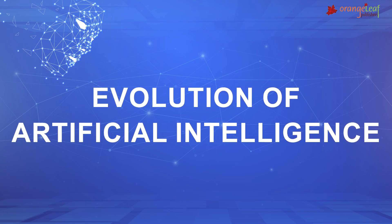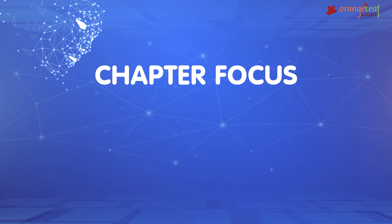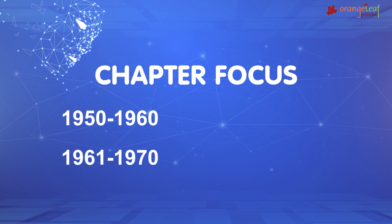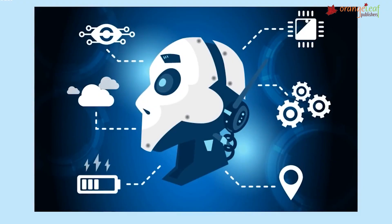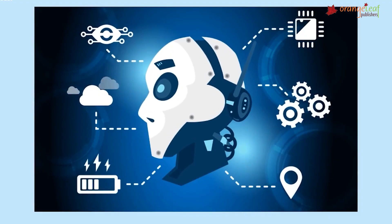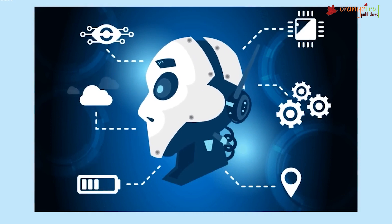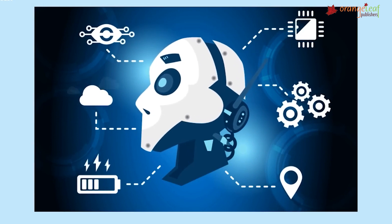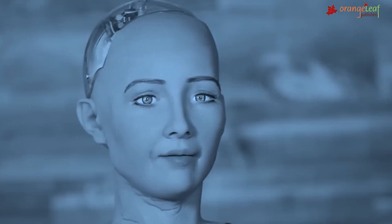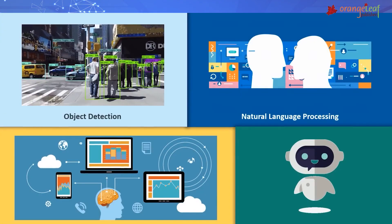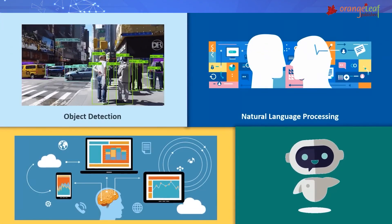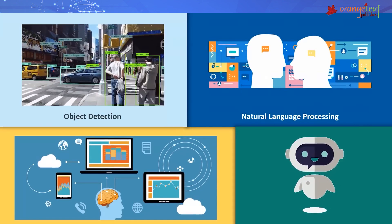Evolution of Artificial Intelligence. Let us understand what happened between 1950 to 1960, 1961 to 1970, 1971 to 2000, and 2000 to 2010. Artificial intelligence is the capacity of a machine to think and learn. Scientists have spent many years attempting to build machines that are artificially intelligent or close to human intelligence. Let us study the evolution of Artificial Intelligence over the past few decades and examine some revolutionary inventions.